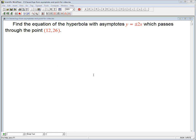Let's find the equation of the hyperbola with given asymptotes and that passes through a certain point. Let's have the asymptotes be y equals plus or minus 2x, which passes through the point 12, 26.